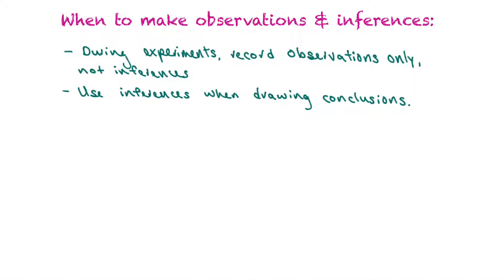So the question is when do we make observations and when do we make inferences in lab experiments? During experiments you should be recording your observations only as the experiment is progressing. We should not jump to conclusions or make inferences at any point during that part of the investigation. We only use our inferences when we draw our conclusions and analyze our results, so we don't make conclusions until later on until after we've collected as many observations as possible.